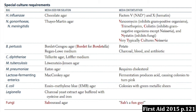Legionella is another bug that requires a really bizarre culture medium. It needs charcoal, yeast extract, and cysteine in order to grow. And fungi are typically grown on Sabouraud agar.